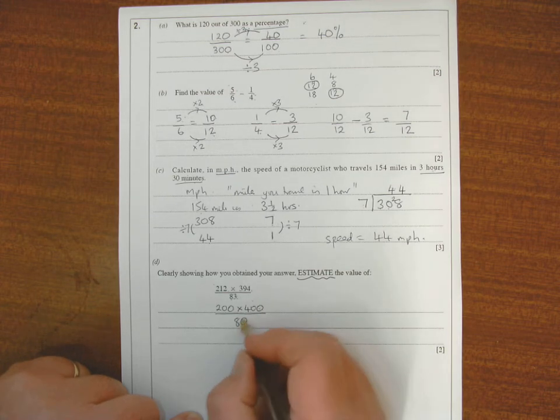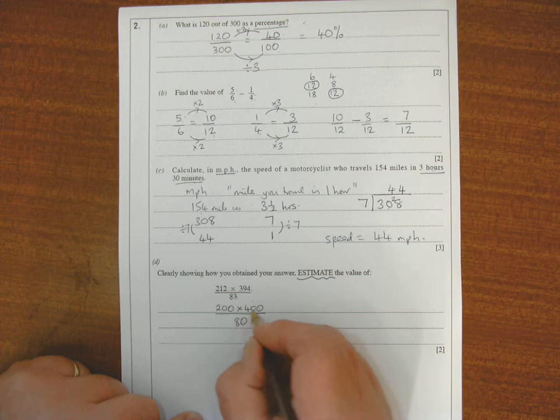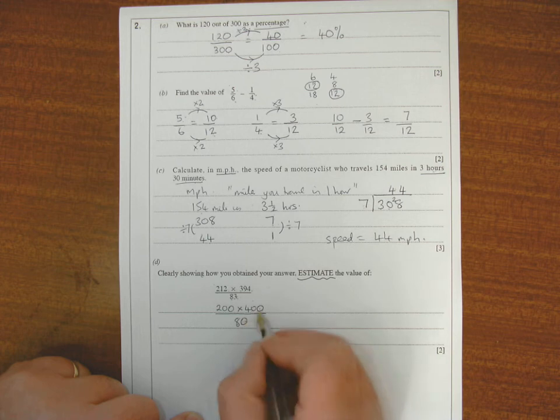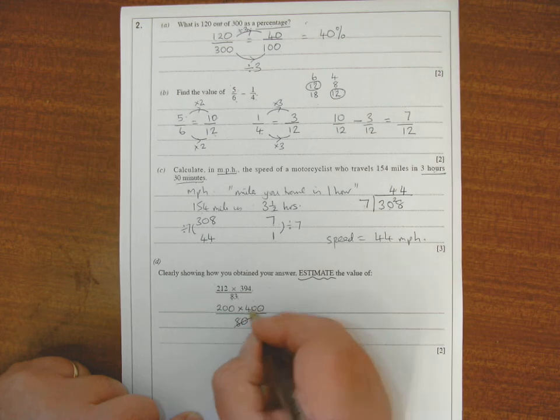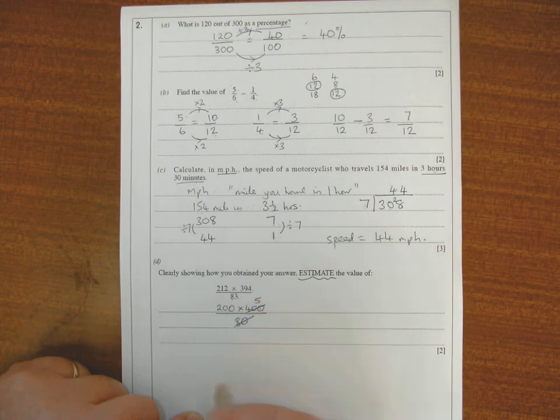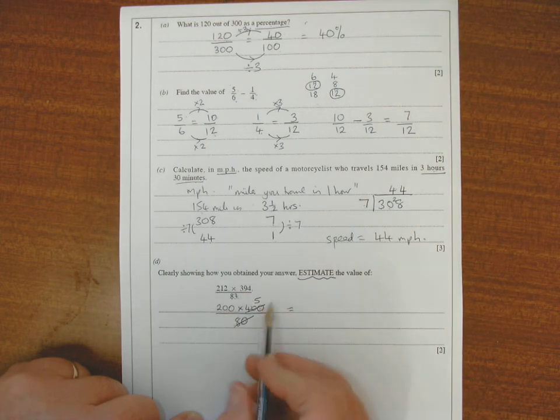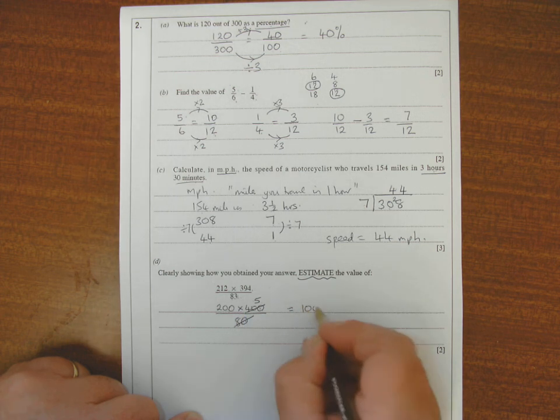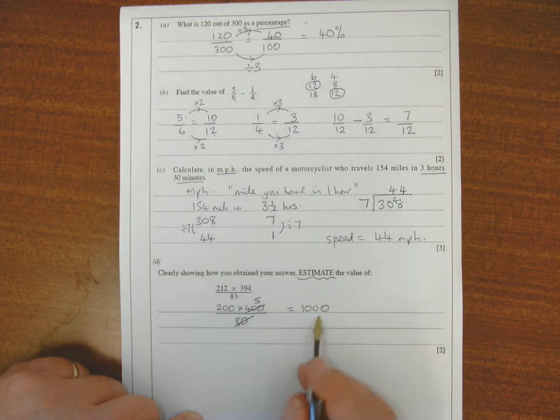Because 8 into 40 goes 5 times, so 80 into 400 also goes 5 times - extra zero on each number. So 80 into 400 goes 5 times. Now do the multiplication: 200 times 5. 5 lots of 200, counting up in 200s: 200, 400, 600, 800, 1000. And there's the second mark.